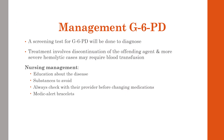Management: a screening test can be done to diagnose G6PD. Treatment involves discontinuation of the offending agent. For severe hemolytic cases, a blood transfusion may be required. Nursing management includes education about the disease, substances to avoid, checking with the provider before changing or adding over-the-counter medications, and wearing a medical alert bracelet.